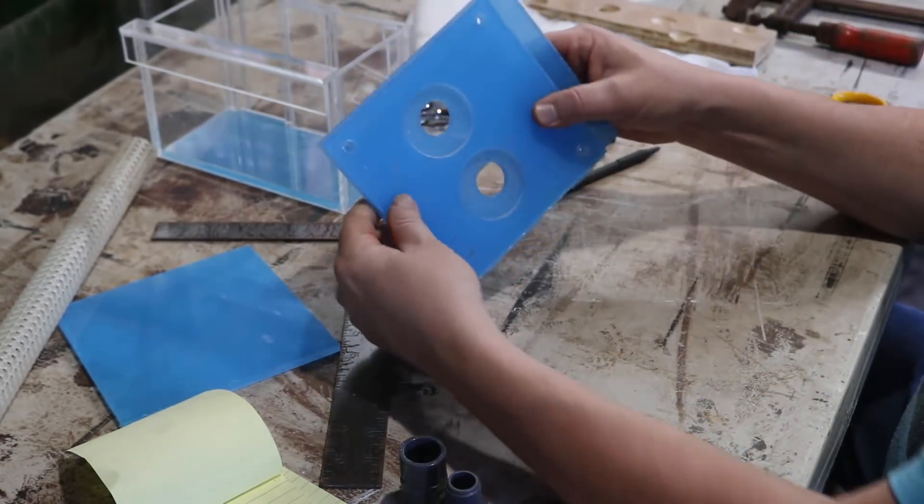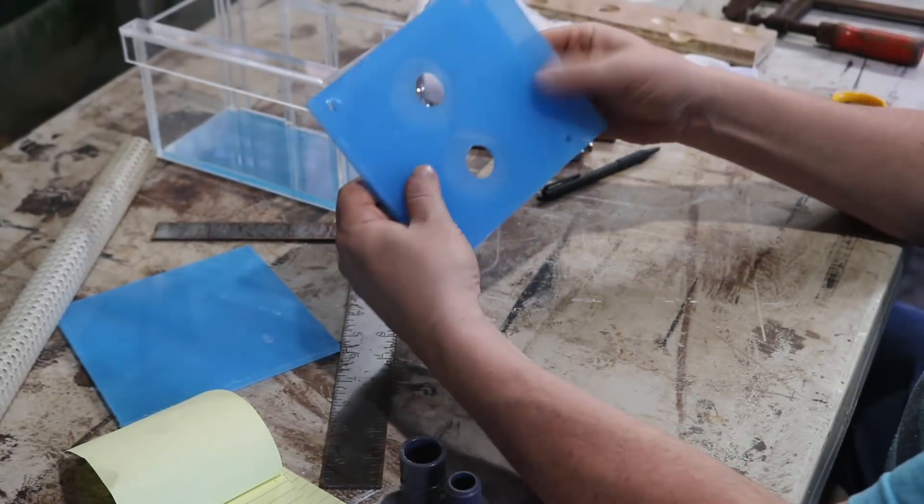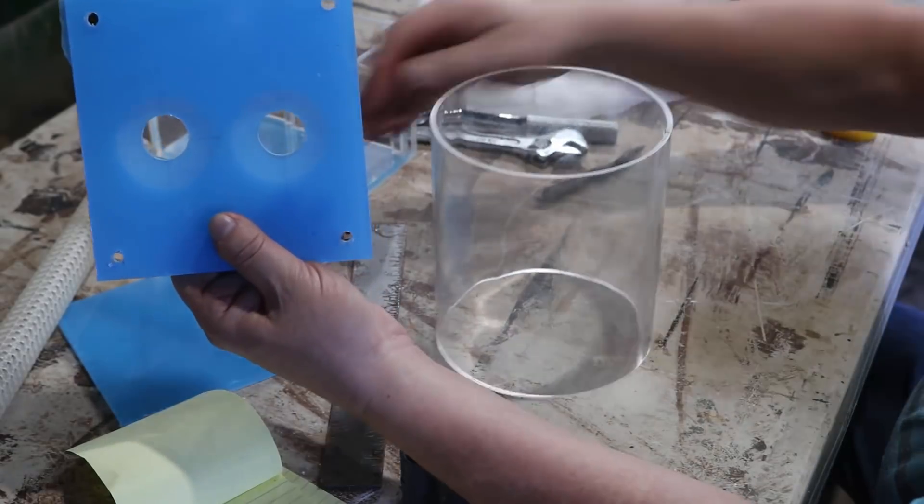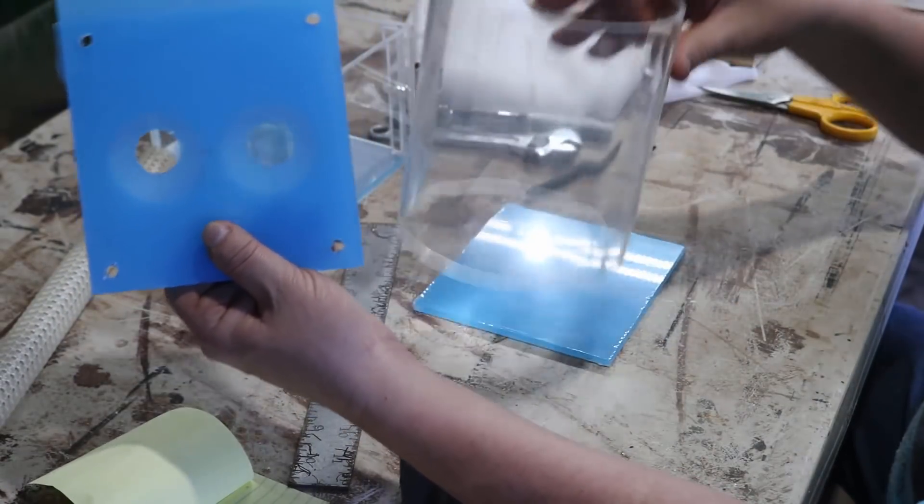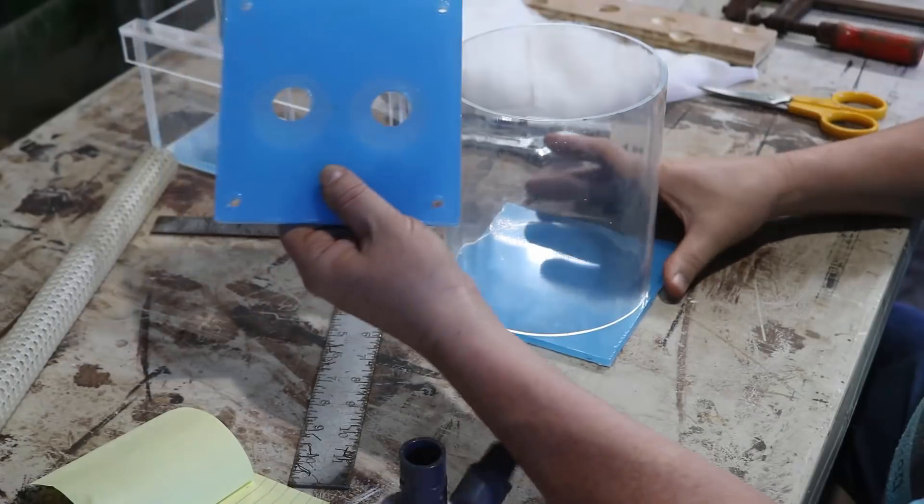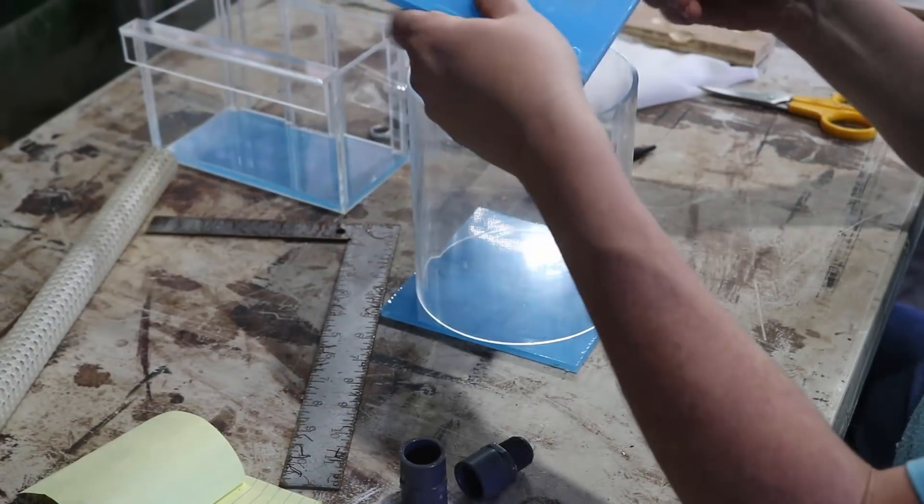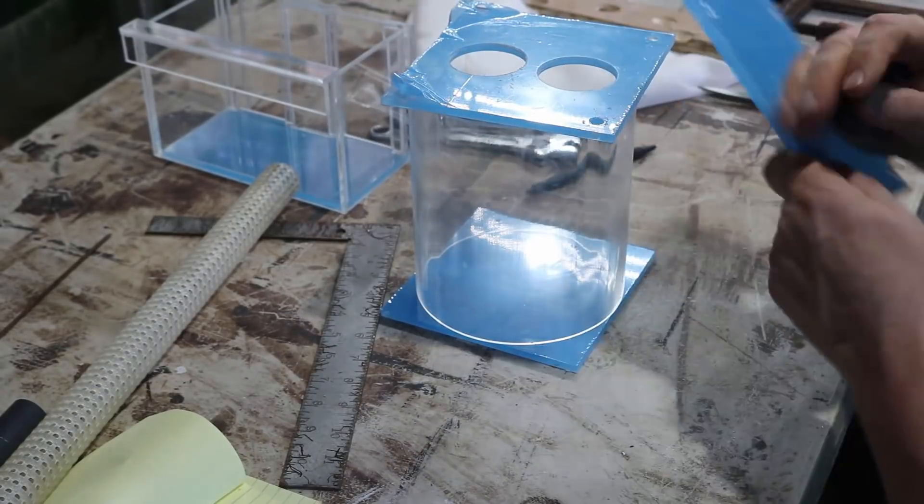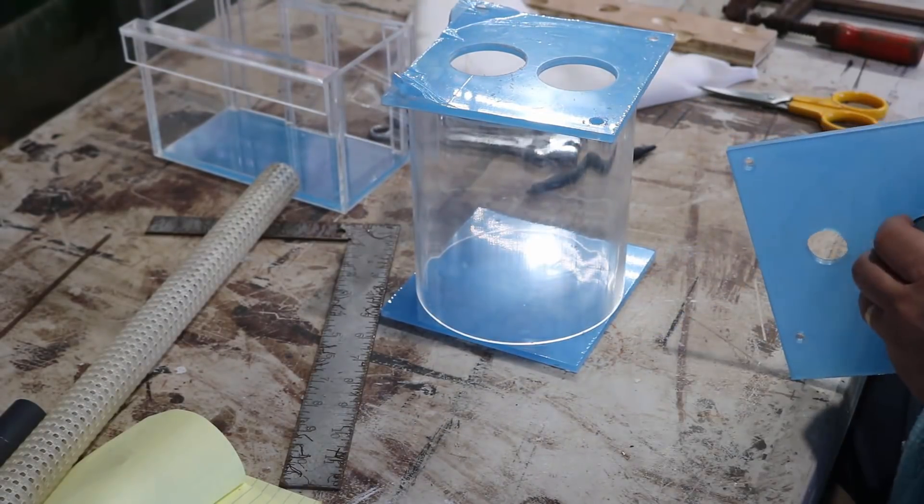The reason it can do that is diatoms have a calcium structure in them, a very fine intricate one. And once they've passed on and they've been dried out, that structure allows you to filter out very, very fine particles. Well I think that's enough technical mumbo jumbo for one video, so let's get back to the build here.